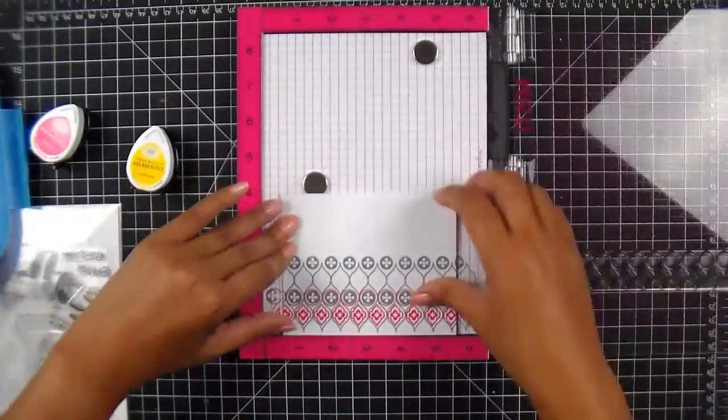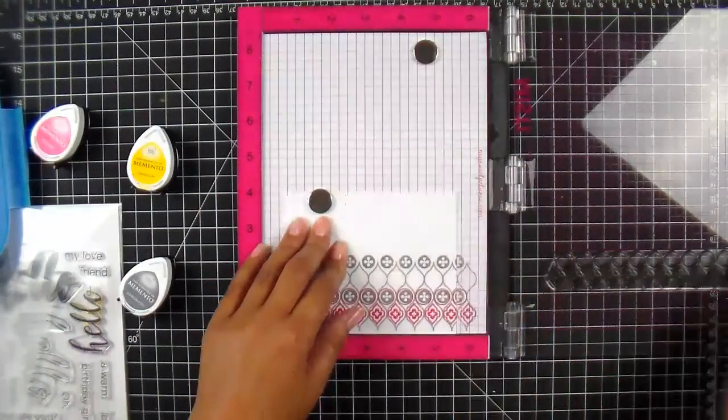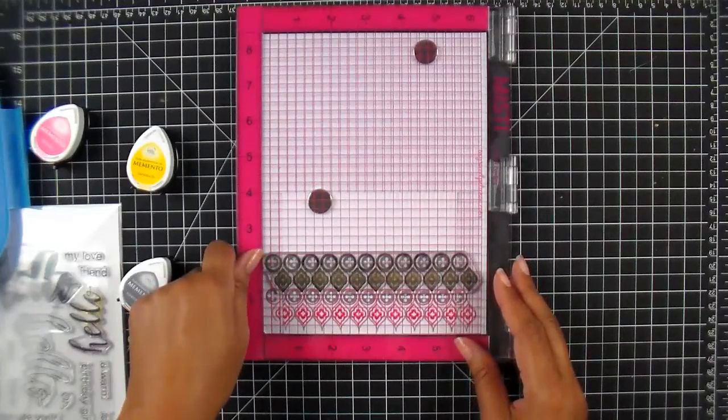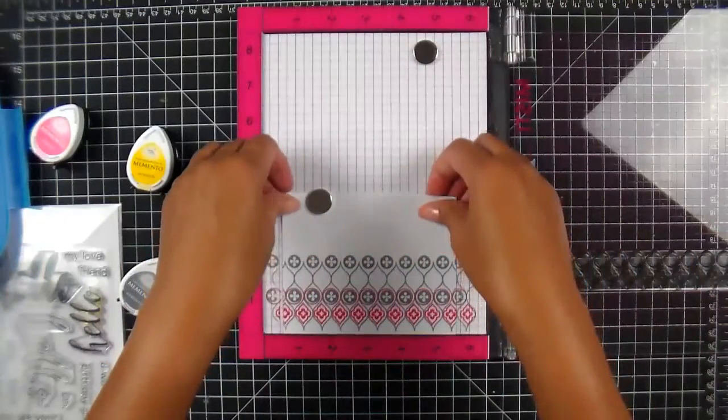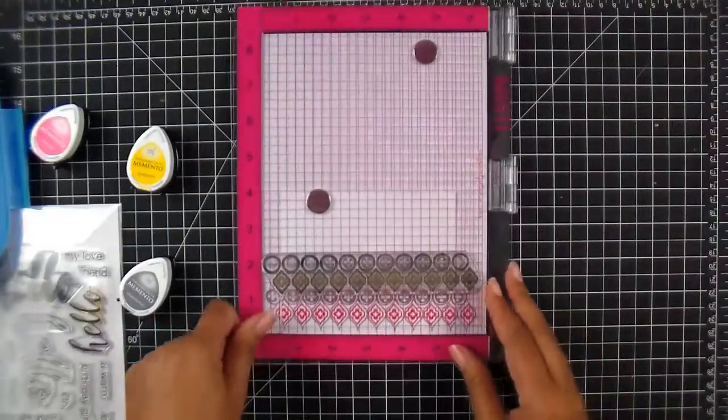Okay, since that moved, not a big worry. Get my magnet, put it back down, and I can double check just to make sure I'm still lined up. I'm off just a tad bit, so I'm going to shift my paper instead of my stamp.